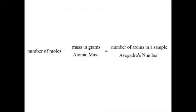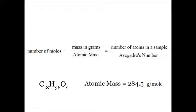Avogadro's number fits into this equation: the number of molecules is equal to the mass of a sample in grams divided by its atomic mass. We know the atomic mass of stearic acid: 284.5 grams per mole. It works even if you don't know Avogadro's number. But we want to find Avogadro's number. The number of moles is also equal to the number of atoms in a sample divided by Avogadro's number.